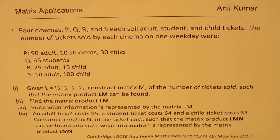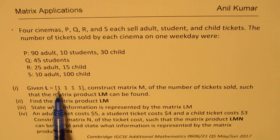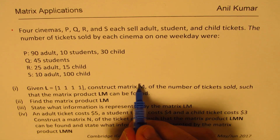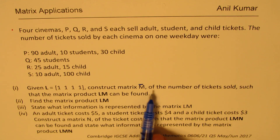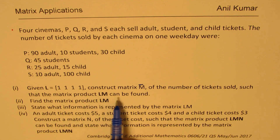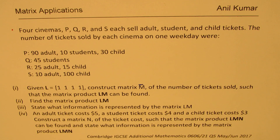The first part of the question: given L equals the row matrix [1, 1, 1, 1], construct matrix M of the number of tickets sold such that the matrix product L×M can be found. Second part: find the matrix product L times M. Third part: state what information is represented by matrix LM.